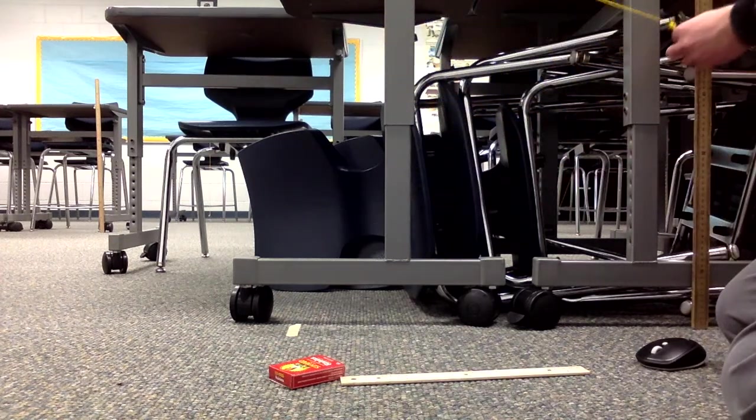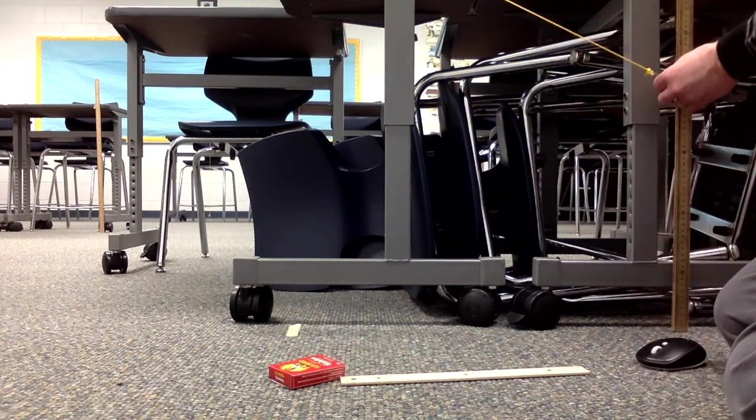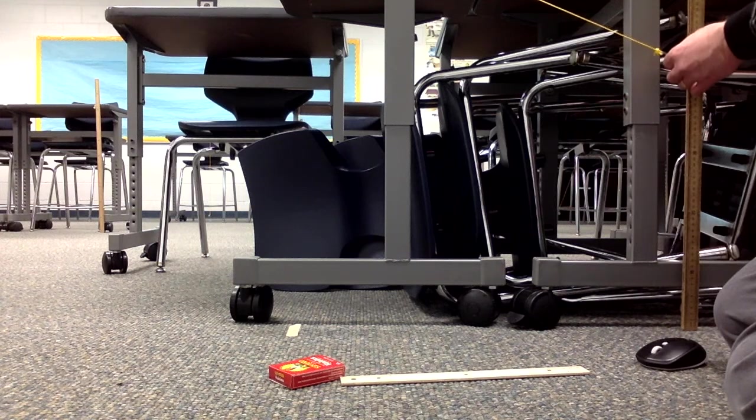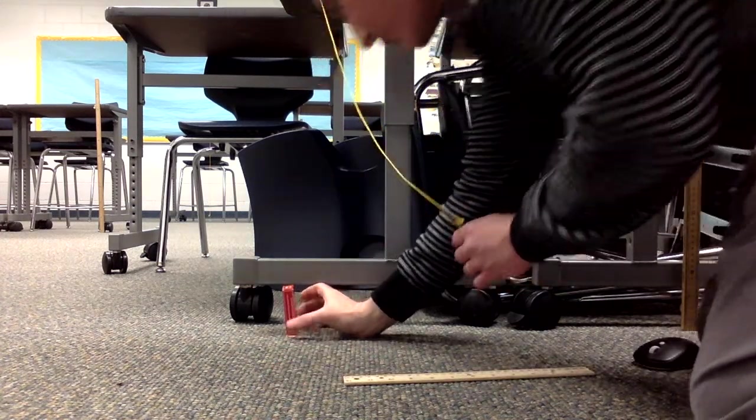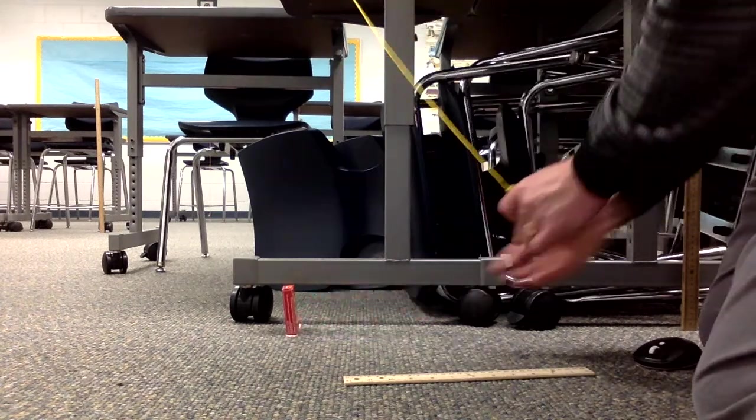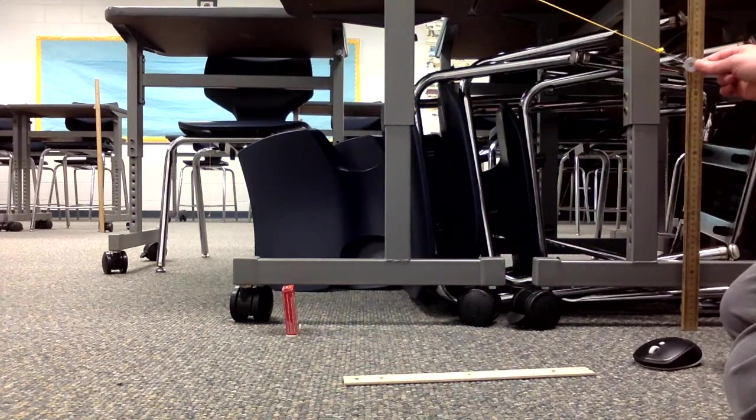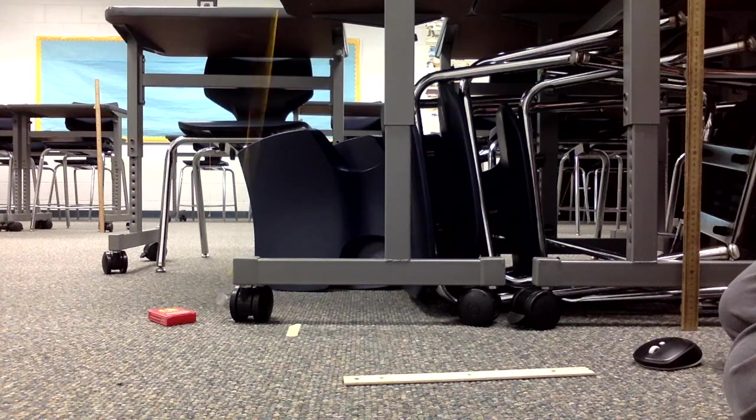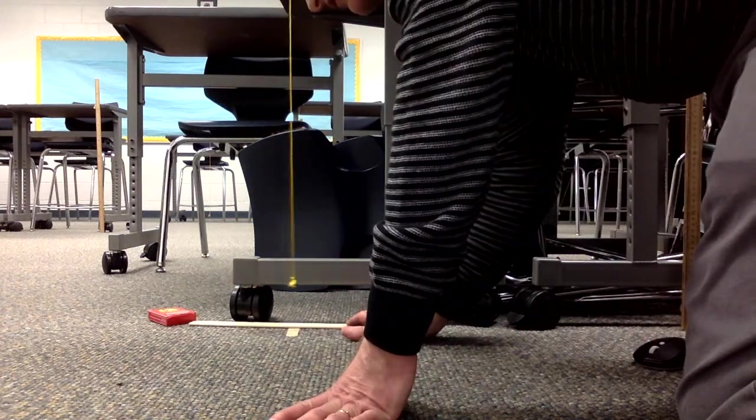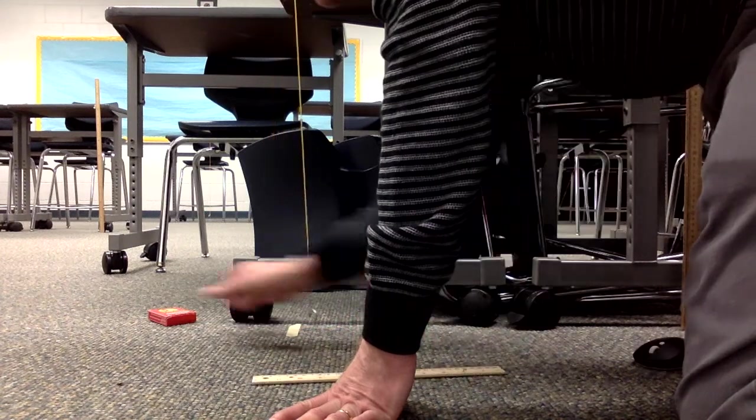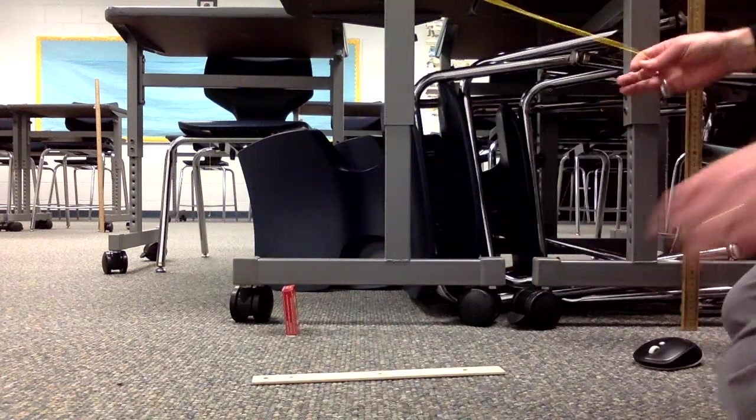Now we're gonna put the washers, or the pendulum I should say, 45 centimeters off the ground. So three washers, 45 centimeters off the ground, trial 1. There we go. And let's see here. So the first time, 17 centimeters. For trial 1, it's 17 centimeters.